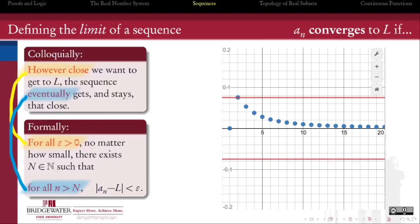More precisely, we say that for all positive numbers epsilon, no matter how small, there exists a term in the sequence called the capital Nth term, this natural number, such that all subsequent terms are within epsilon's reach of that limit L.